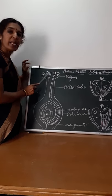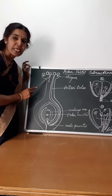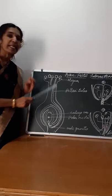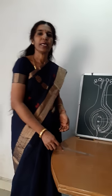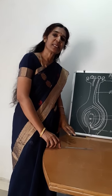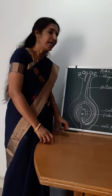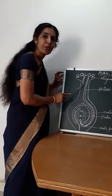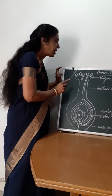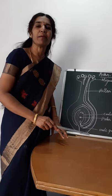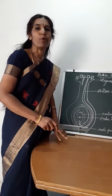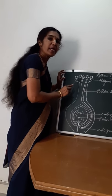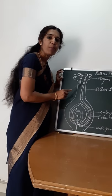When the pollen lands on the stigma, the stigma has to recognize the pollen — whether it is compatible. Then the stigma will allow the pollen tube to grow. If the pollen is incompatible or sterile, then the stigma and the pistil will reject the pollen and will not allow the pollen tube to grow.